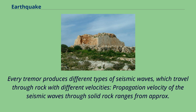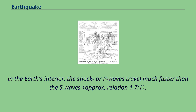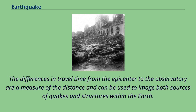Every tremor produces different types of seismic waves, which travel through rock with different velocities. Propagation velocity of seismic waves through solid rock ranges from approximately 3 km per second up to 13 km per second, depending on the density and elasticity of the medium. In the Earth's interior, the shock or P waves travel much faster than the S waves. The differences in travel time from the epicenter to the observatory are a measure of the distance and can be used to image both sources of quakes and structures within the Earth.